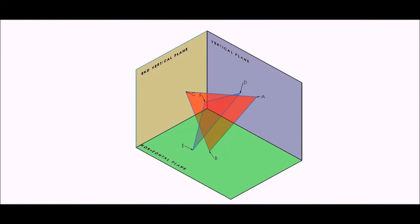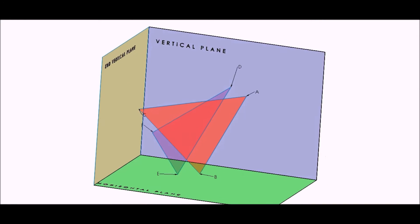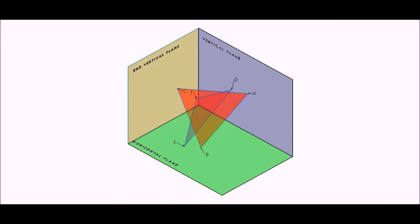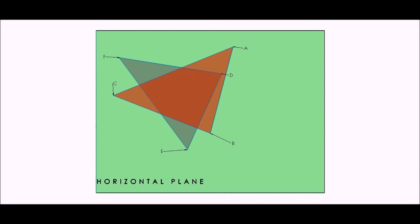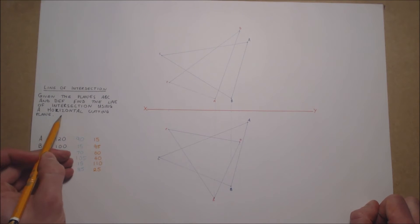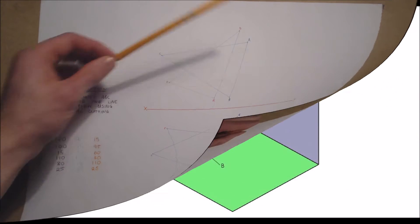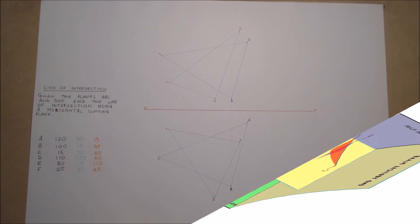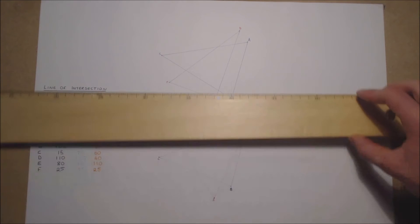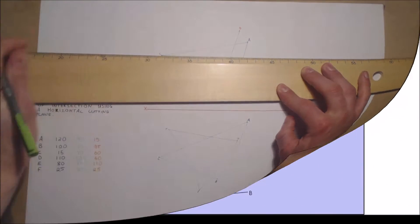Here we see a SOLIDWORKS model of how these planes will appear in elevation and in plan. Using horizontal cutting planes from a point already located, we will be able to find a point on the line of intersection. In this SOLIDWORKS model we have a horizontal plane from point C. Where this cutting plane cuts the planes ABC and DEF will give us a point on the line of intersection in plan.